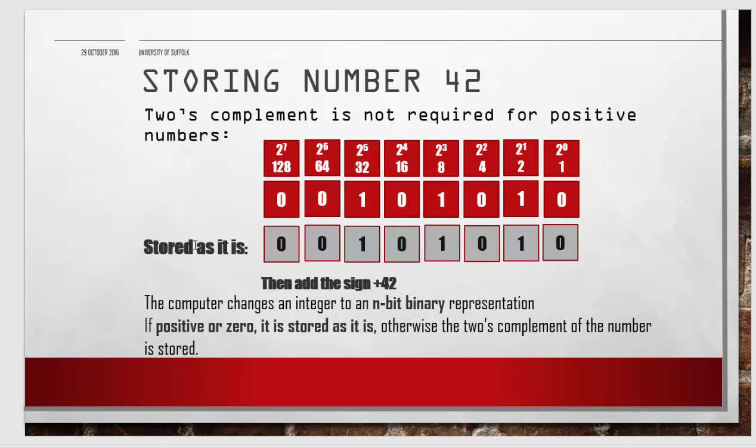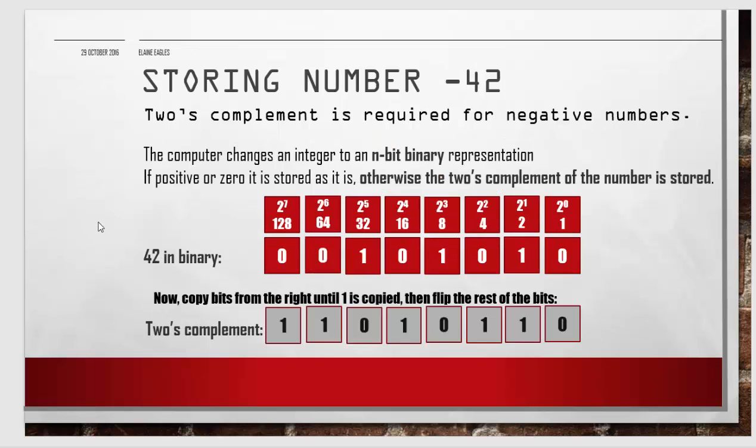This is 42: 32 plus 8 is 40 plus 2, so that's the binary for 42. Because it's a positive value, it's just stored as it is.